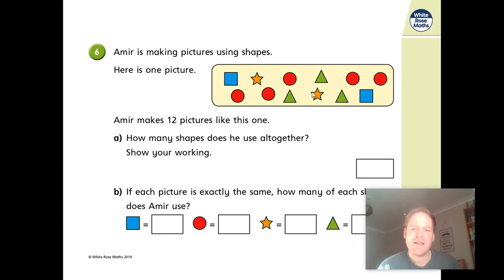Question six. Amir is making pictures using shapes. Here is one picture. Amir makes 12 pictures like this one. How many shapes does he use together? So count up the shapes that are in that picture at the top there, just here. And you're looking to basically do the multiplication sum. So you've got one, two, three, four, five, six, seven.